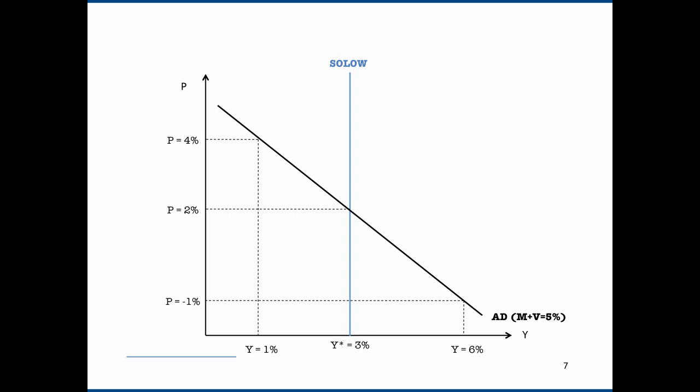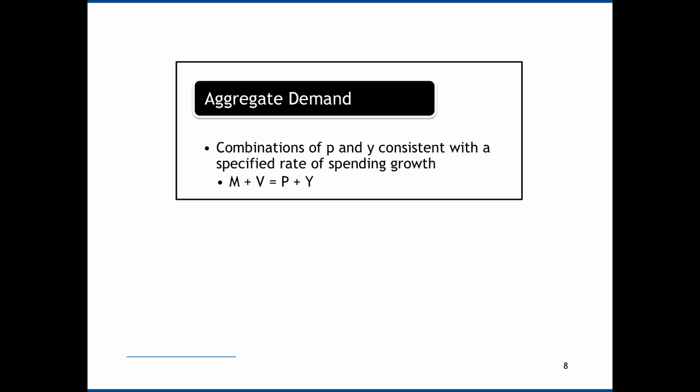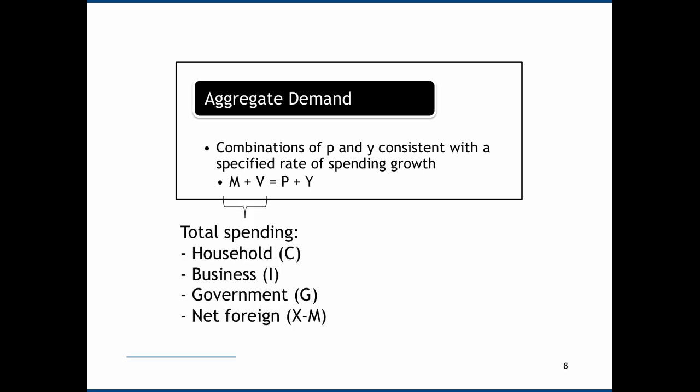Every single point along that black line sums to 5%. Causes of shifts are simply anything that causes a change to M or to V. If we think of M as the money supply, then it's relatively straightforward to think about how changes in central bank activity will cause M to shift and therefore aggregate demand to shift. It's also worthwhile talking in a bit more detail about what constitutes causes of shifts in V, in velocity of circulation. If we return to our original equation of exchange — M plus V equals P plus Y — we can think of V as anything that changes aggregate demand other than changes in M.